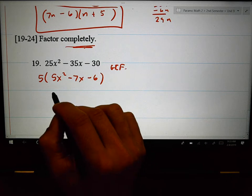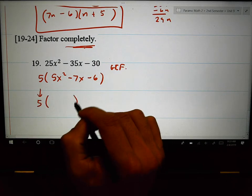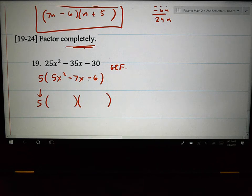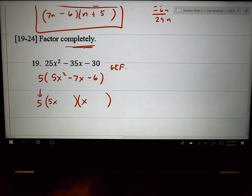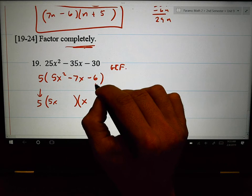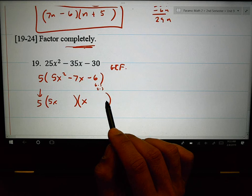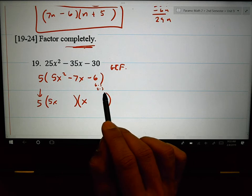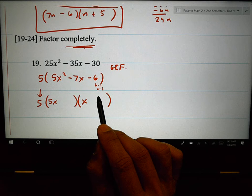And then hopefully, I mean, keep the 5 there. Maybe this factors further. Probably does. 5x and x. Let's see. It's either 6 and 1 or 2 and 3. 15 and 2 does not work. 10 and 3 does work. So, let's put the 2 there and the 3 there. That would make 10x.